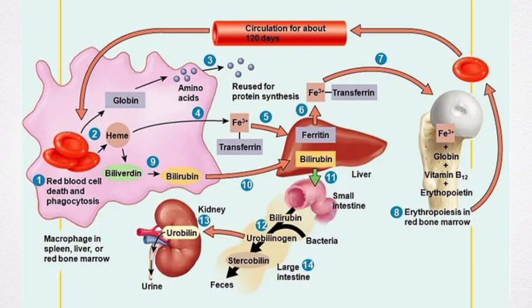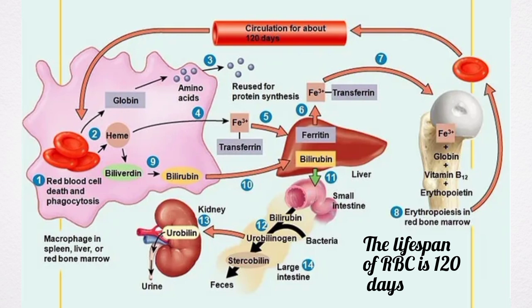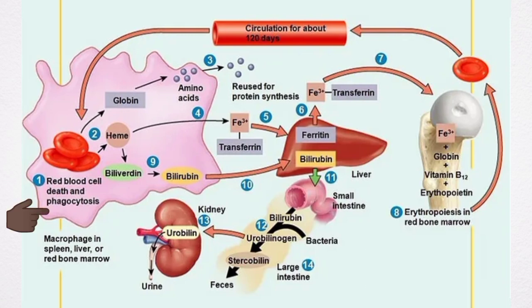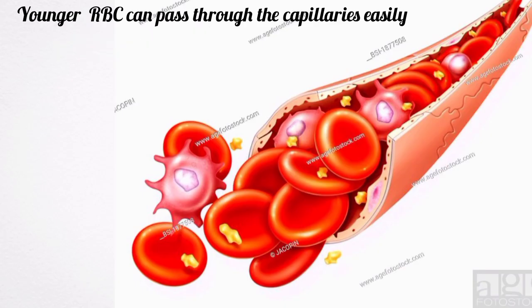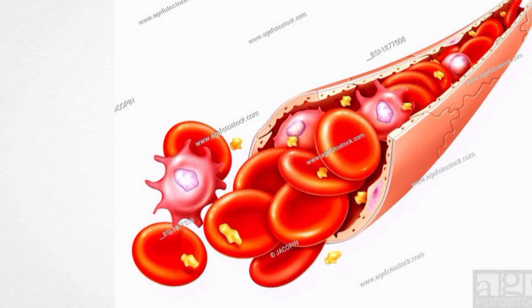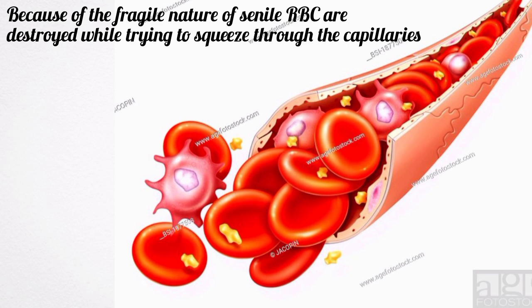The average lifespan of red blood cells is about 120 days. After their lifetime, the senile red blood cells are destroyed in the reticuloendothelial system. When the cells become senile, the cell membrane becomes more fragile. The diameter of the capillaries is less than or equal to that of red blood cells. Younger red blood cells can pass through the capillaries easily; however, because of their fragile nature, the senile cells are destroyed while trying to squeeze through the capillaries.